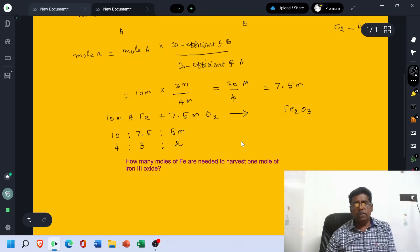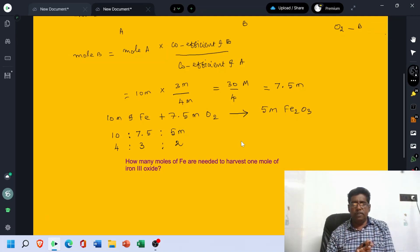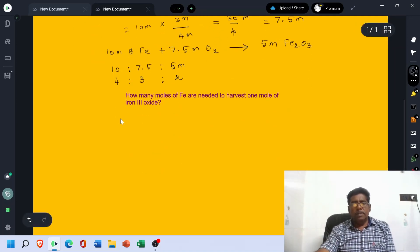Now, the ratio is 4 is to 3 is to 2. Here we can get 5 mols of Fe2O3. In this way, we have to fix the compounds. To understand more, consider the second problem.